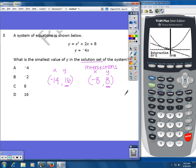Now, my question specifically asked for the smallest value of Y. So if I look at my two Ys, I have a 16 and an 8. The smaller one is 8. So my answer would be C.